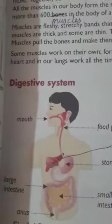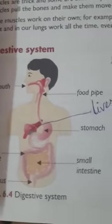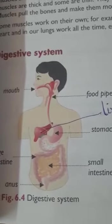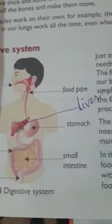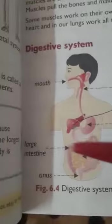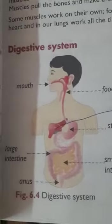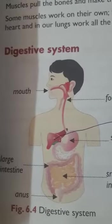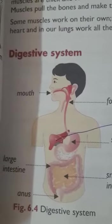In today's video we will discuss in detail about the digestive system. In the digestive system, the parts and organs involved are: mouth, food pipe, stomach, liver, small intestine, large intestine, and anus. Let's see the digestion process. Just as a car needs fuel to run, our body needs food to do different types of work.